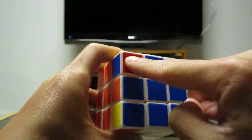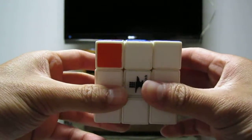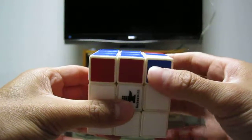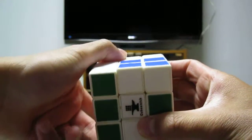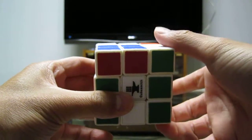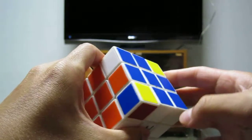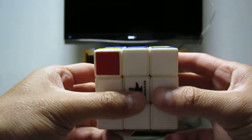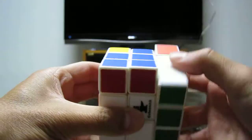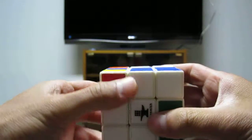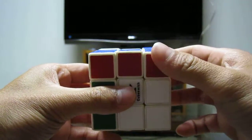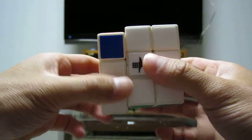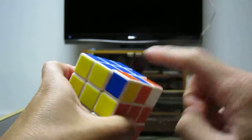Now you gotta rearrange these other three corners, and you do the same algorithm. It is U, R, U inverted, left inverted, U, R inverted, U inverted, left. And now, they are in the matching area.